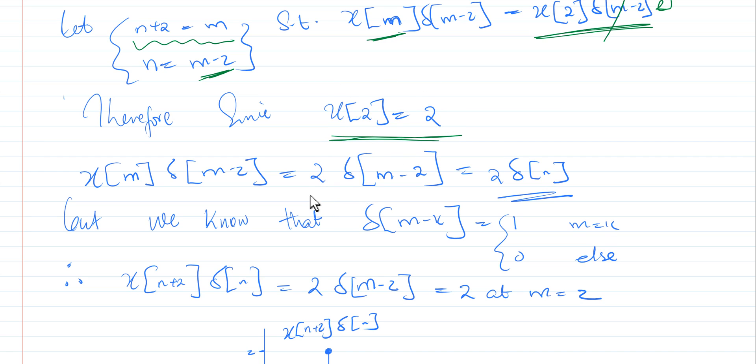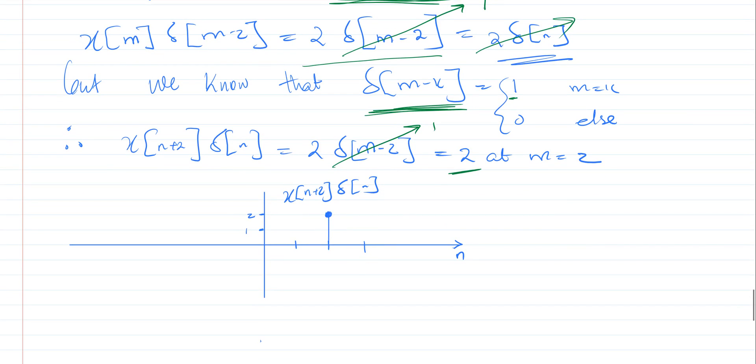Or I'm just putting it down here that this is now going to be 2 multiplied by delta of m minus 2. But we know that it will be equals to 1 when m is equals to k. Therefore, we are going to be saying that when m is equals to 2, then we are going to have a value there giving us a 1. And once we get that 1, the final value is simply going to be a 2, and that 2 will be at m is equals to 2.